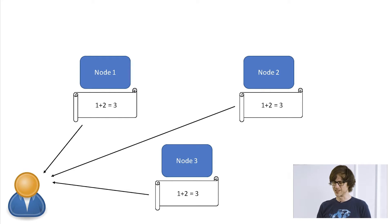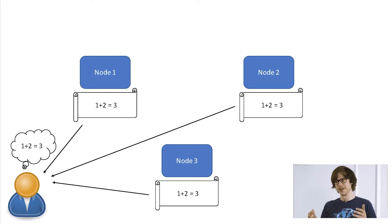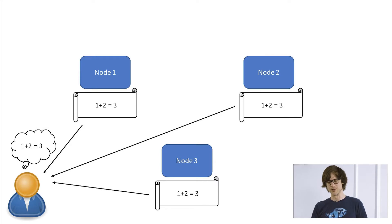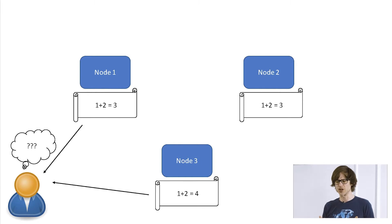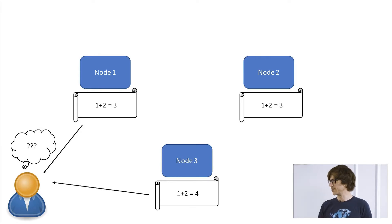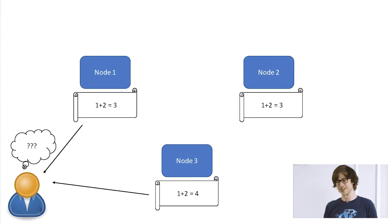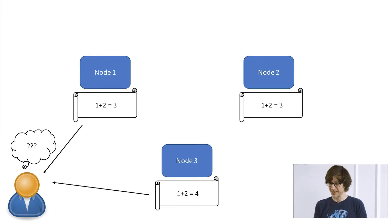Bob could then ask any node in the network for the result of his computation request and receive 3. But Bob asks: 'What if some nodes are cheating and produce wrong output? How do I determine which output is correct?' For instance, nodes 1 and 2 honestly compute 1+2=3, but node 3 cheats and says 1+2=4. If Bob asks the cheating node, he'd think the answer is 4. So that's a problem.